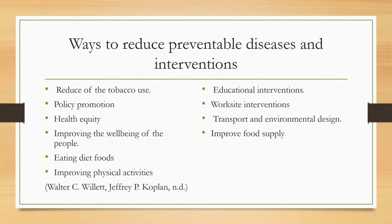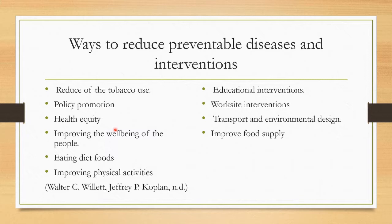The occupational dimension involves deriving personal satisfaction from your vocation — what you do to earn a living. Now, ways to reduce preventable diseases: we need to reduce tobacco use, which has been contributing greatly to leading causes of diseases. Policy promotion means creating policies that help people learn about and limit the use of harmful products. Health equity involves distributing resources to different areas so people can access the services they need, improving well-being. Eating dietary foods — fruits and vegetables — and avoiding junk food also helps improve health.